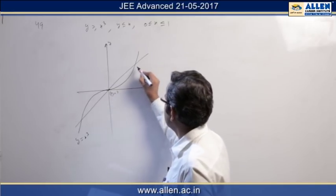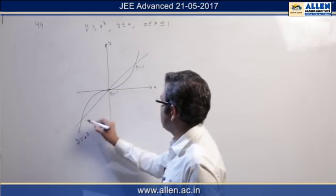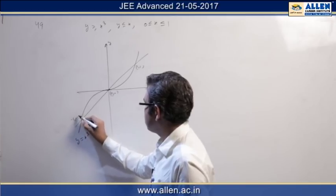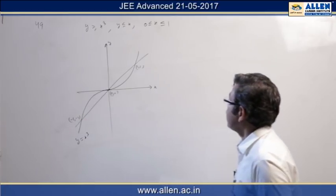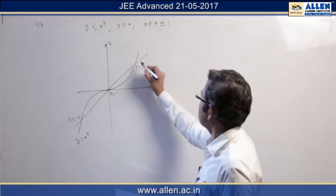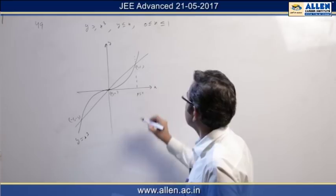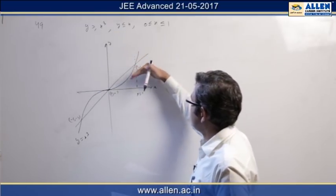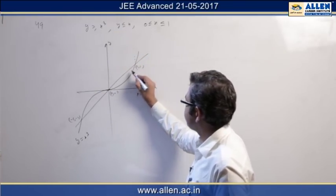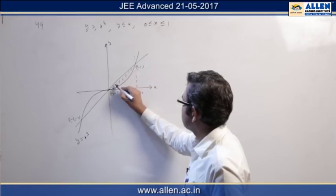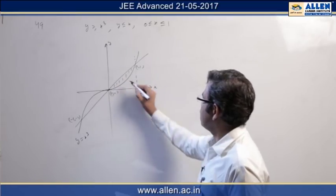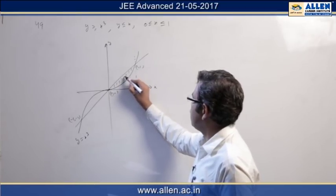One is (0,0), this is (1,1), and this is (-1,-1). Now as per the given information, and this is our x = 1, as per the inequality, points are below this line and above the curve. So this is the area which we need to find.